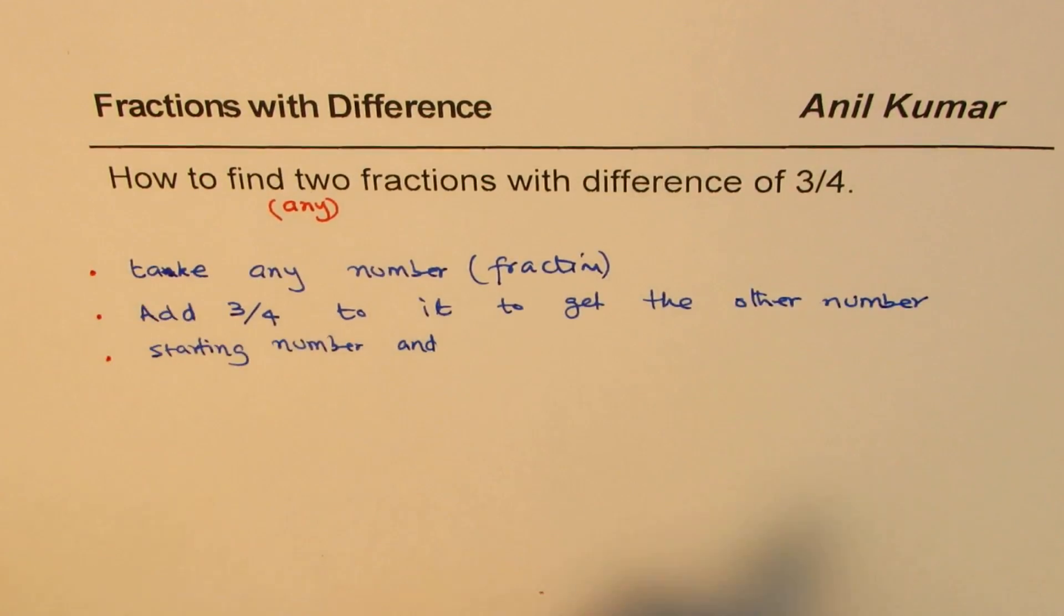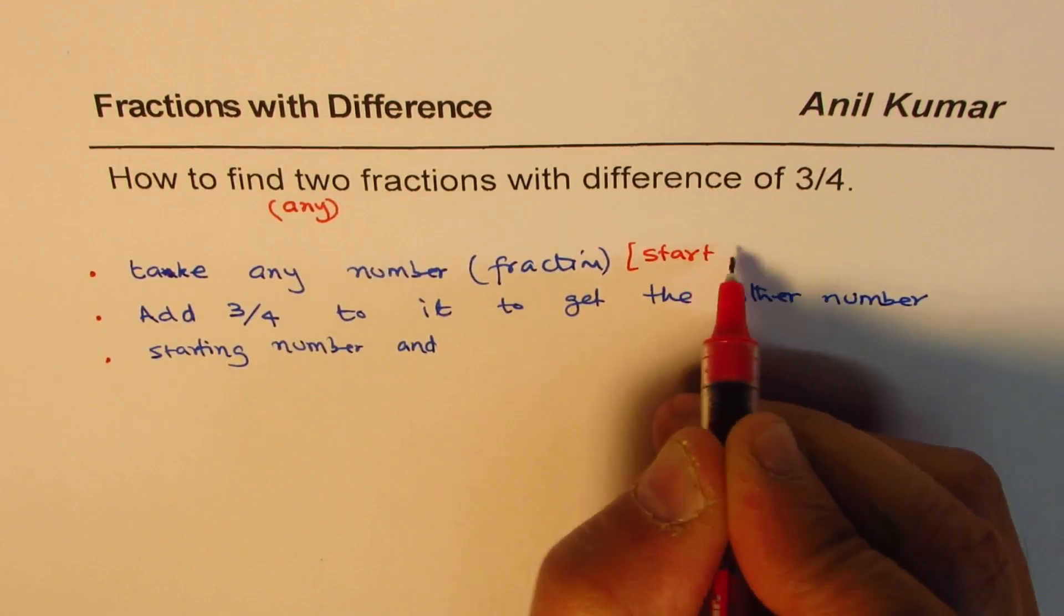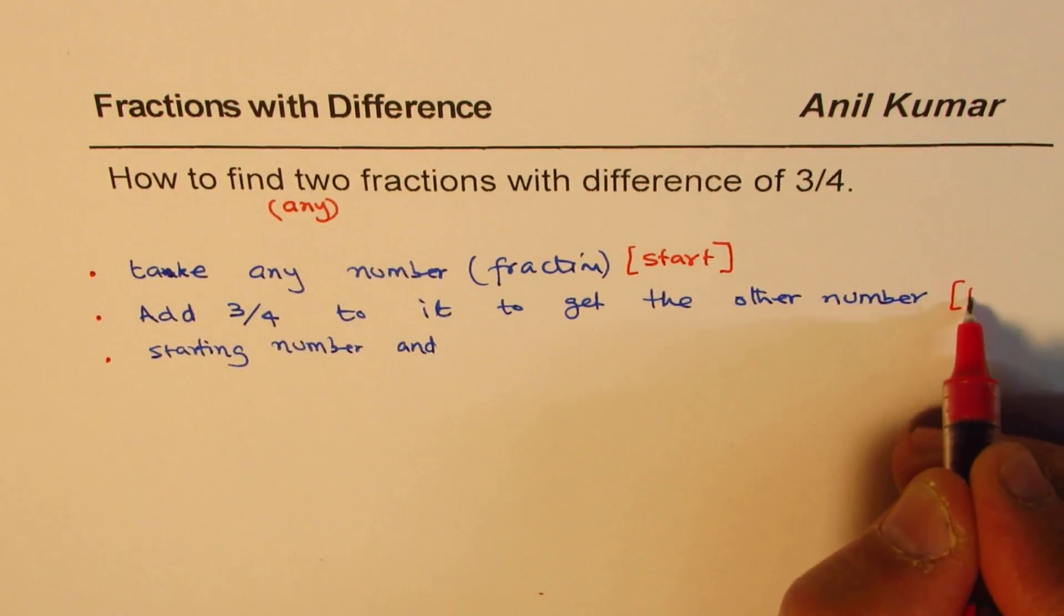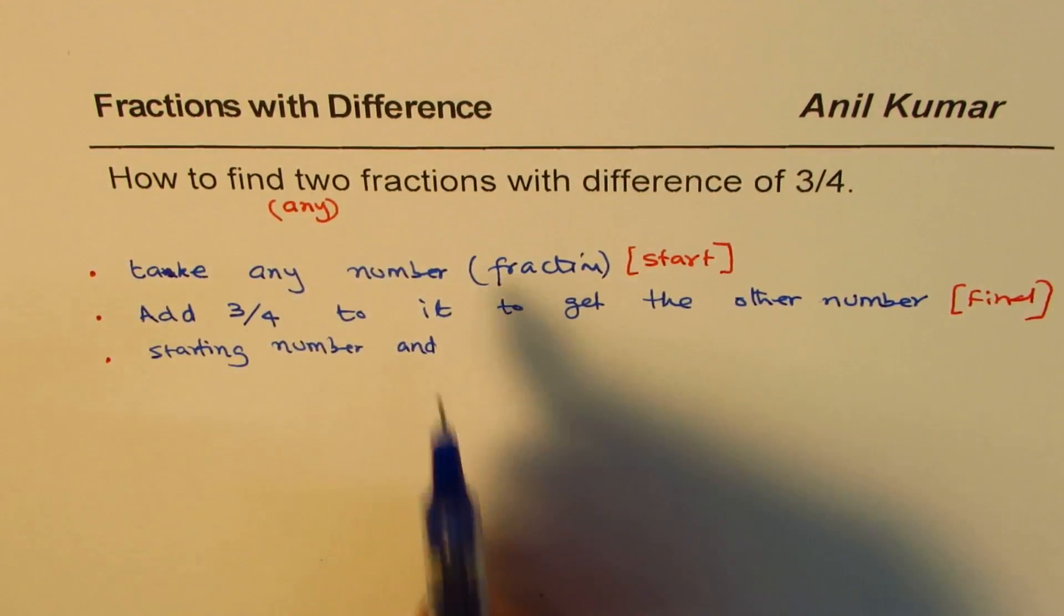So, this one is your starting number. So, take any number. So, we'll call this as starting number. You start at this. And this is your final. So, starting number and final number.